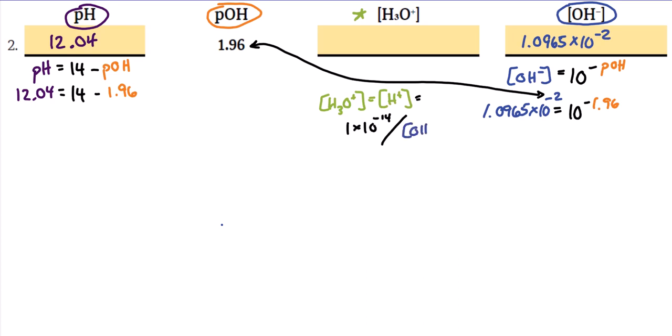To do this, you'll take 1 times 10 to the negative 14 and divide by the concentration that you know. Alternatively, and more likely for most students, you'll take 10 to the negative pH.